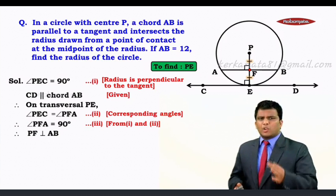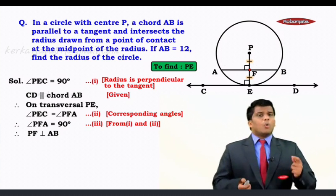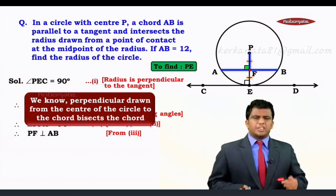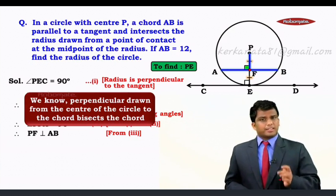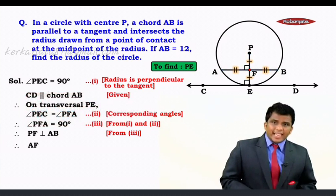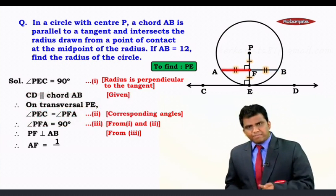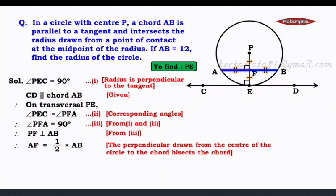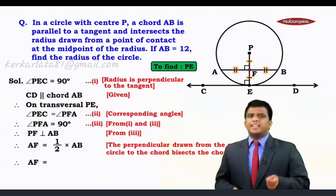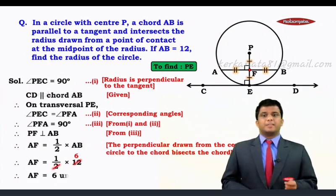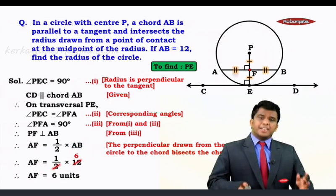And we now have a perpendicular from the center to the chord. We know the perpendicular drawn from the center of the circle to the chord bisects the chord. So because PF is perpendicular to AB, we can now say AF will be equals to FB, which will be equals to half of AB. The perpendicular drawn from the center of the circle to the chord bisects the chord. AB is given as 12. So we'll substitute 12. So when we reduce it, AF becomes 6 units.